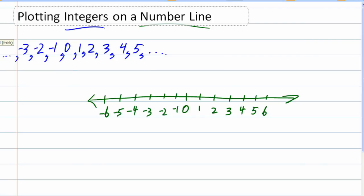Let's take some of those numbers and plot them. Let's say negative 2, 0 — which is always a good one — and let's say 3 and 5. To plot those on my number line, I want to put a dot right above or right on the number line next to that number. So negative 2 gets a dot right above negative 2, then 0, then 3, and 5. So we have plotted all four of those numbers.